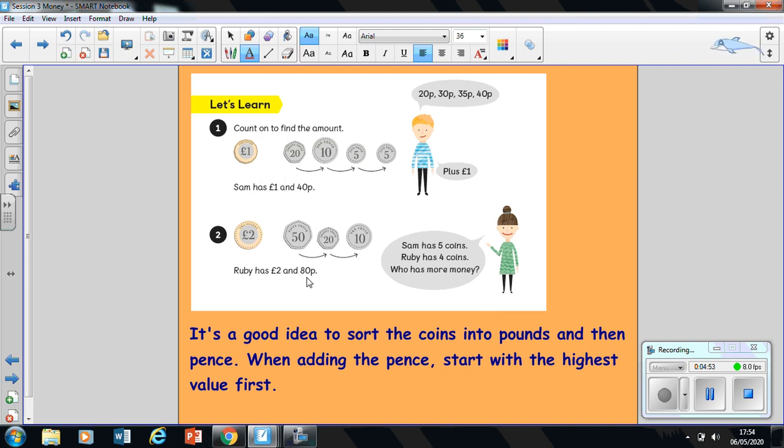Just a quick reminder that it's always good when you're counting up your money to separate your coins into pounds and then pence. Start adding your pounds, and when you're adding your pence, just like we did in the first lesson, you start with the highest pence first. You've got your 50, which is the highest or biggest pence coin, and then you add your next pennies altogether. If you're not sure, pause the video or go back and check from last week's learning.